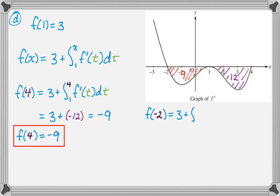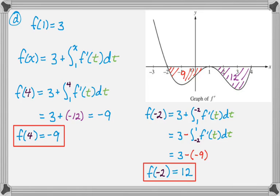And then to find f of negative 2, it's 3 plus the integral from 1 to negative 2 of f prime of t dt. I'm going to switch the bounds and change the sign. So it's 3 minus the integral from negative 2 to 1 of f prime of t dt. And fill in the value. So that's 3 minus negative 9. So f of negative 2 is 12.